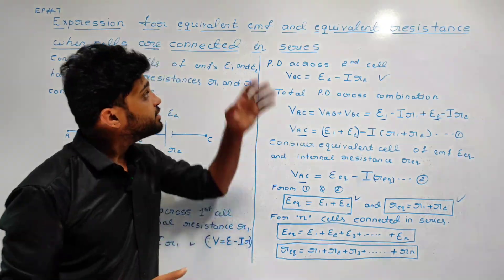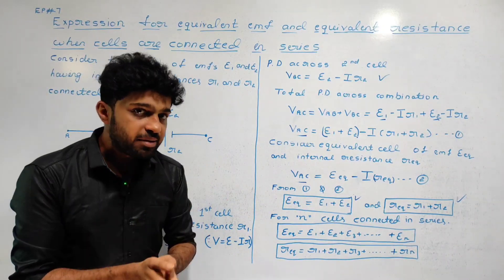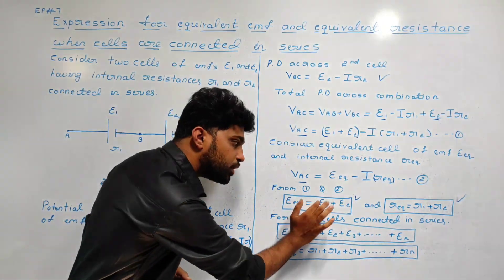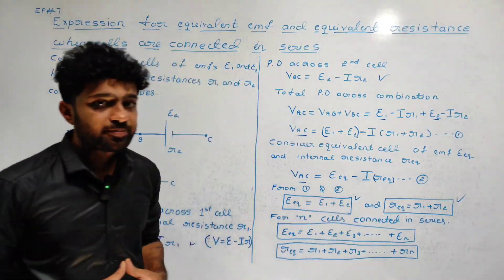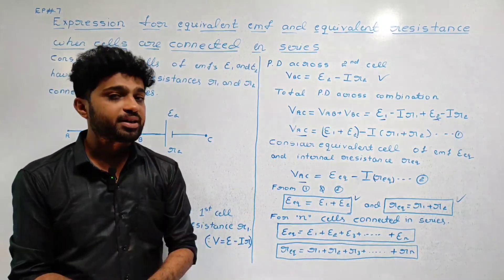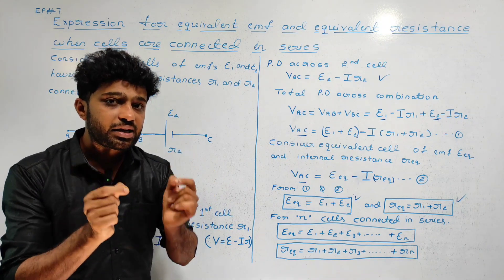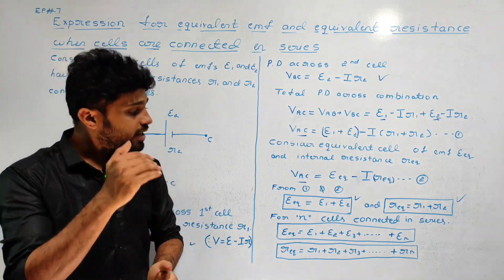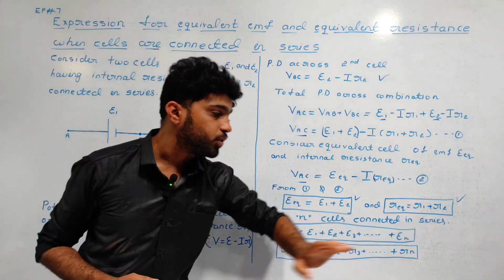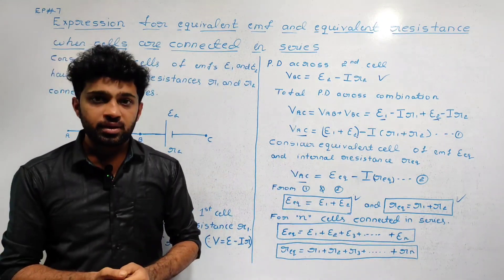For two cells connected in series, the equivalent EMF expression is: Eq is equal to E1 plus E2. The equivalent internal resistance expression is: Req is equal to R1 plus R2.